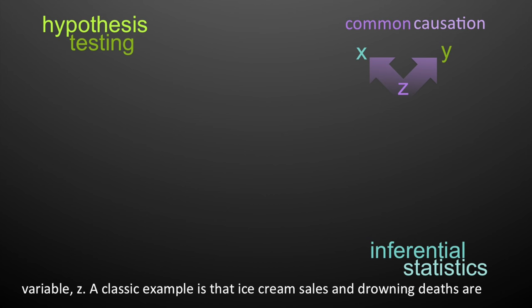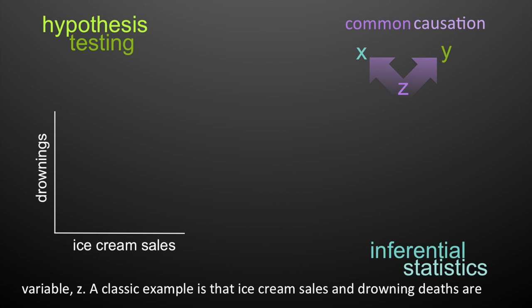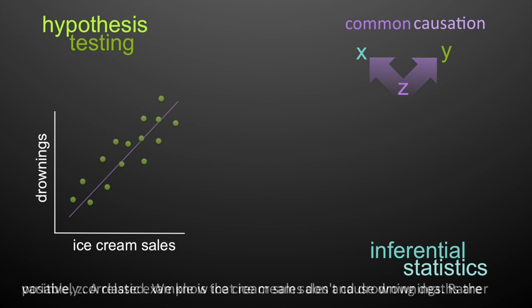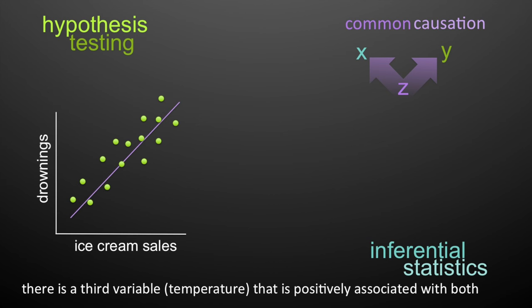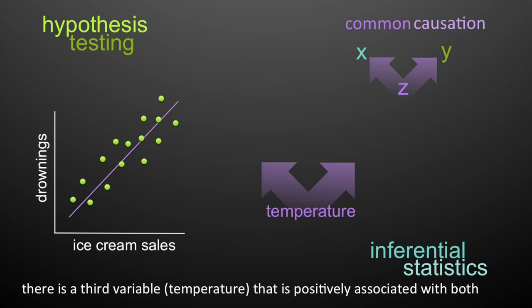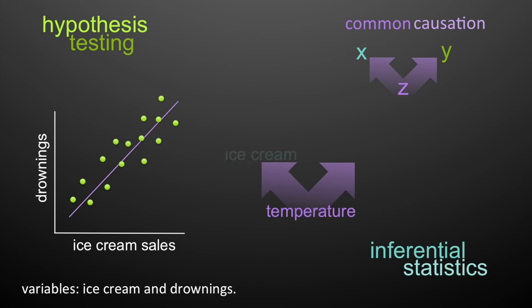A third possibility is common causation, where X and Y are both affected by a third variable Z. A classic example is that ice cream sales and drowning deaths are positively correlated. We know ice cream sales don't cause drownings — rather, there's a third variable, temperature, that is positively associated with both variables.